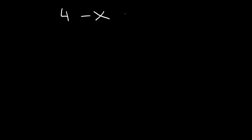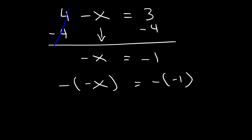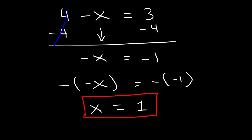Try a similar problem. Let's say that 4 minus x is equal to 3. Like before, we subtract both sides by 4. 3 minus 4 is equal to negative 1, and we bring down the negative x. Multiplying both sides by a negative sign: negative times negative x is positive x, and negative times negative 1 is positive 1. So x is equal to 1. And it makes sense because 4 minus 1 is 3.